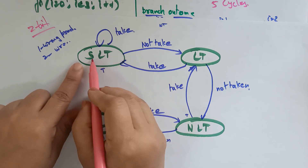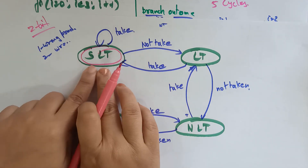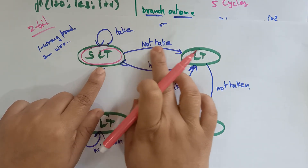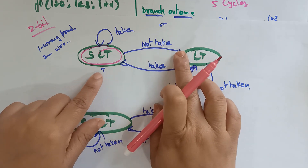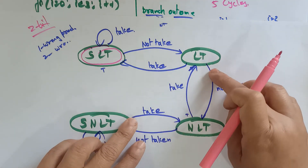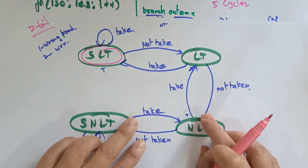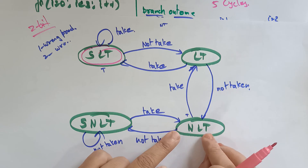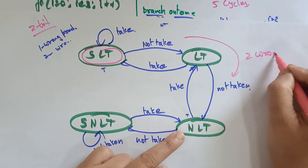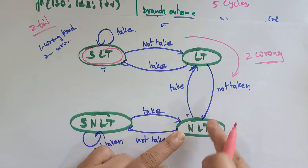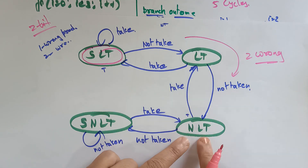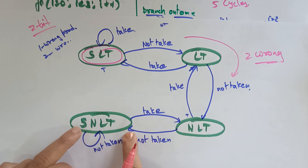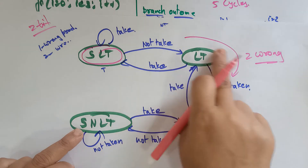Let me explain again. Starting with strong likely to be taken — I want to take the branch. But the outcome shows I don't want to take: I was wrong. Even though I was wrong I try lightly taking the branch. It is still saying not to take — two wrong predictions. Now I decide I don't want to take the branch. Two wrong predictions means I change from LT to NLT.